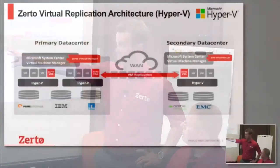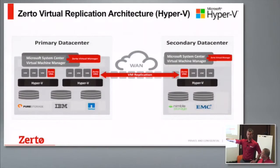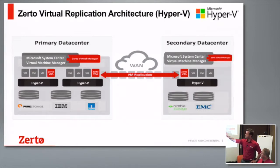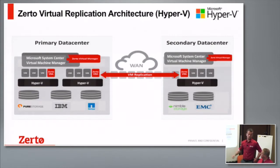You can do that in your primary site with no maintenance mode required — you don't have to disrupt any of the VMs running on that Hyper-V host, just as in VMware. Once you've deployed that infrastructure, you do it again in your second data center — whether that's VMware or Hyper-V again, it doesn't matter — and then you link the two Zerto managers together.